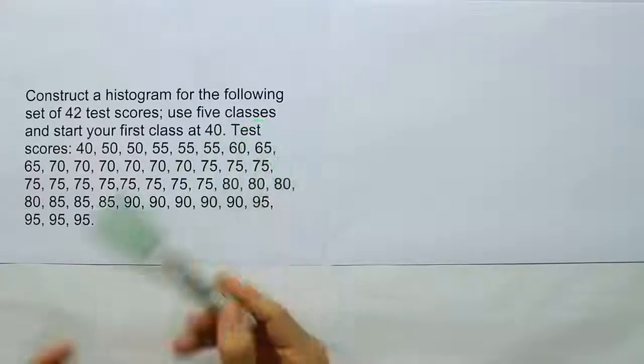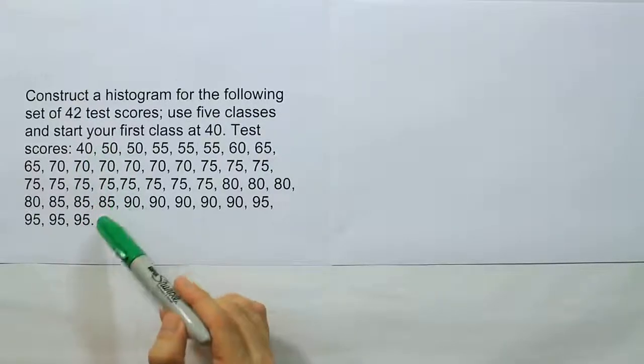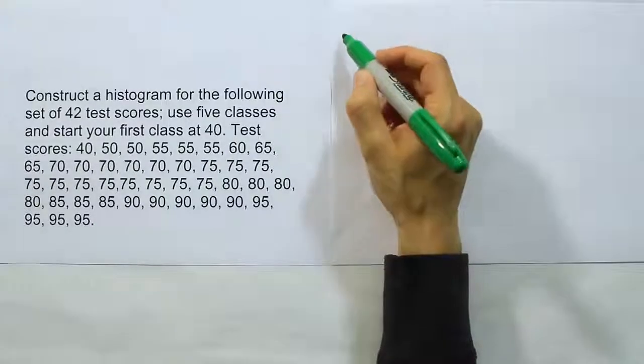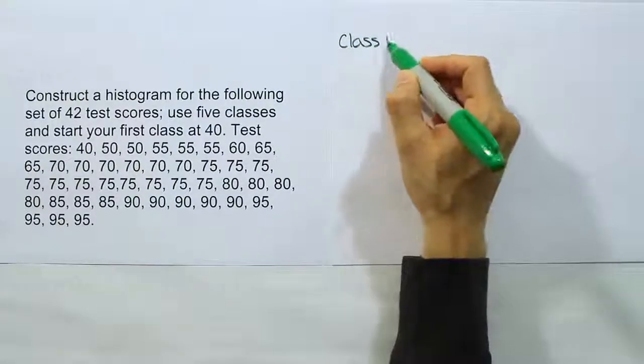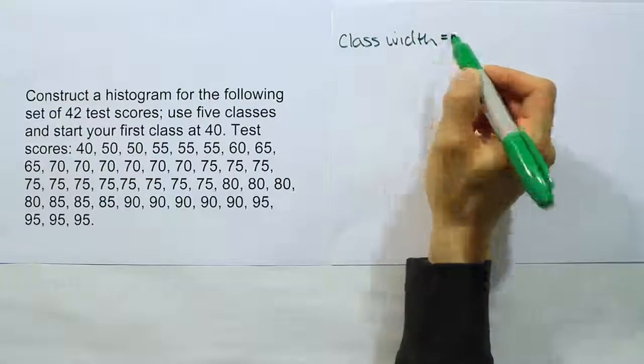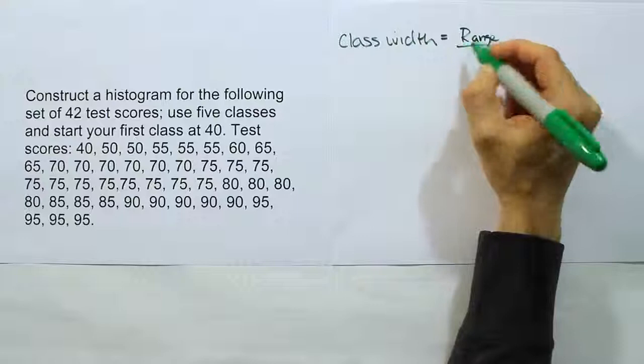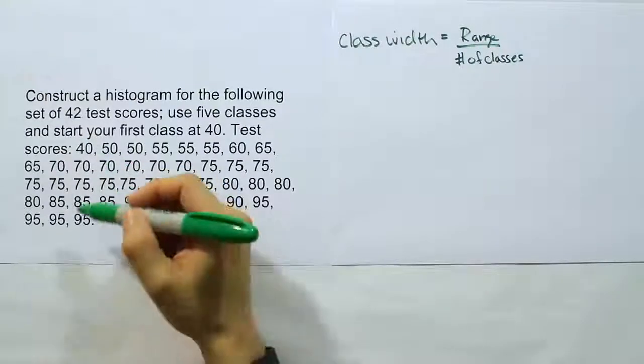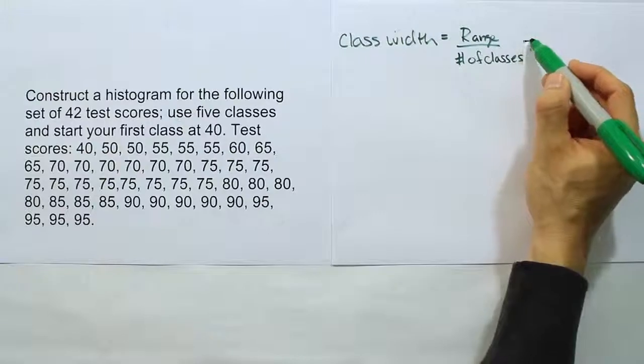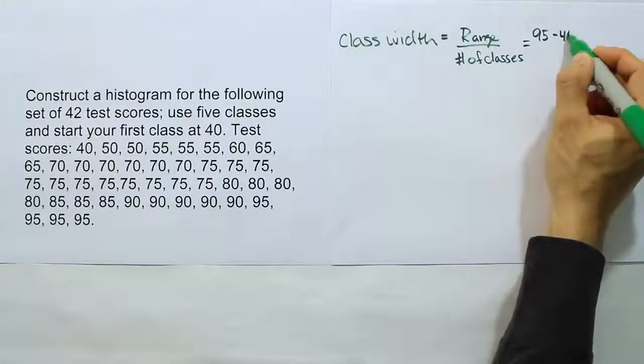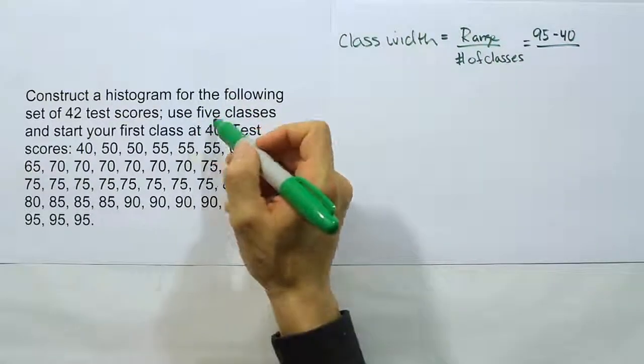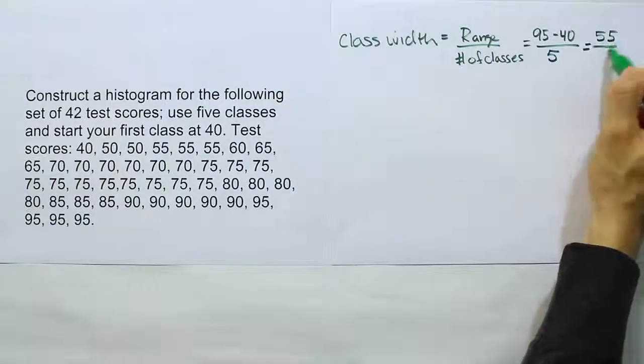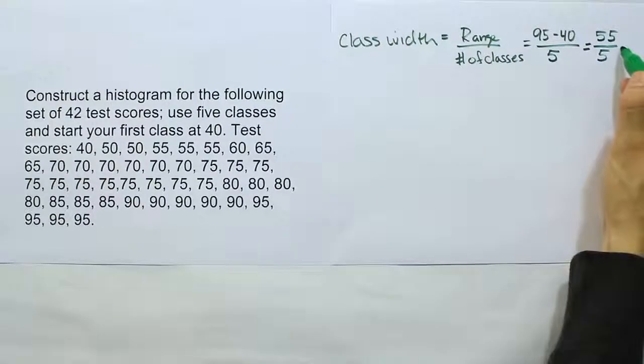Since we know that we're going to be using five classes, and we can look at the numbers since they're in order and figure out the smallest and the largest value, we can determine the formula for class width. The formula for class width is the range divided by the number of classes. In this problem, the range is going to be 95 minus 40, or 55. If we divide by the number of classes, five, then we'll have 55 over 5. When you do the arithmetic there, you're going to end up with 11.